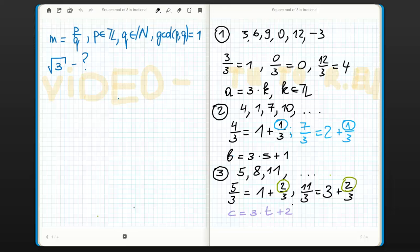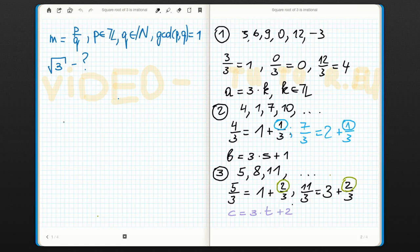So after the preparation, the proving right now is really easy. We just once again assume that the square root of 3 equals p over q.